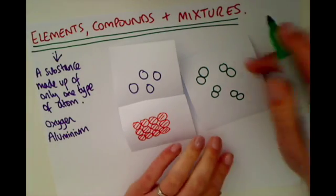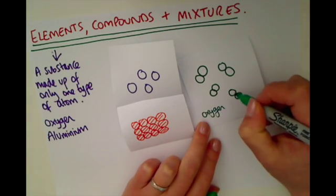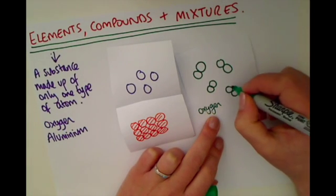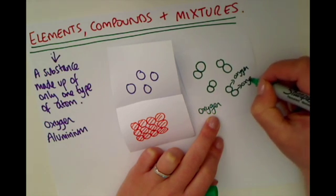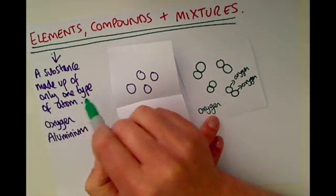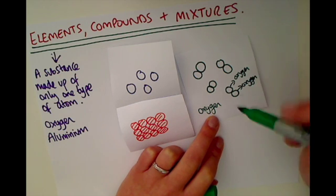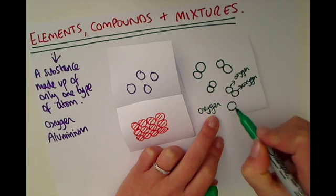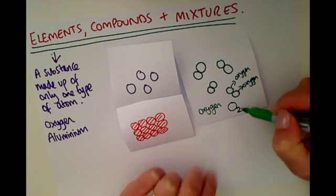For example, this could be oxygen because you have two oxygen atoms going around together, but they are the same type. So this could be one oxygen atom and this could be another oxygen atom. Going back to our definition — a substance made up of only one type of atom — they're only made up of oxygen, so it's an element. In fact, oxygen does go around in pairs, and that's why you'll hear it called O₂.